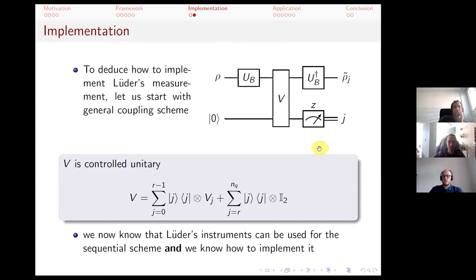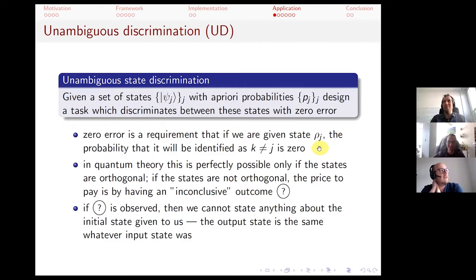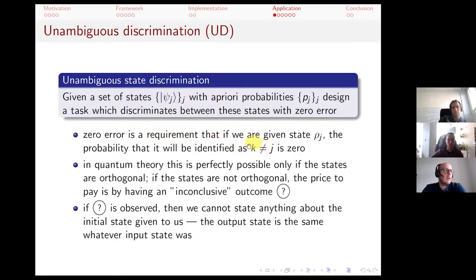Now for the application: unambiguous state discrimination (USD). This is a standard quantum information task where you are given a set of pure states ψ_j with a priori probabilities p_j, and you must discriminate between them with zero error — if you identify state ψ_2, it must truly be ψ_2. The price for non-orthogonal states is an inconclusive outcome (denoted '?'), where you say 'I don't know,' but you must never give a wrong definite answer.